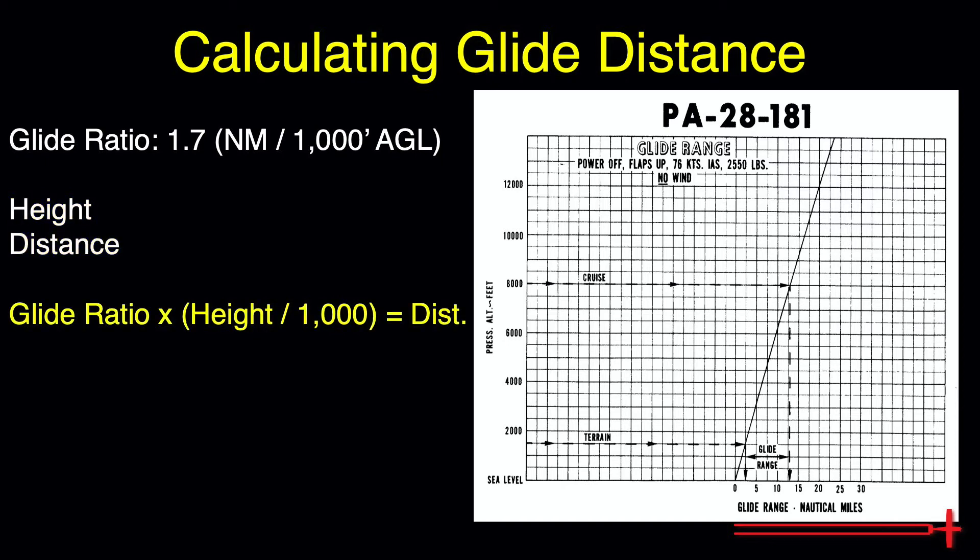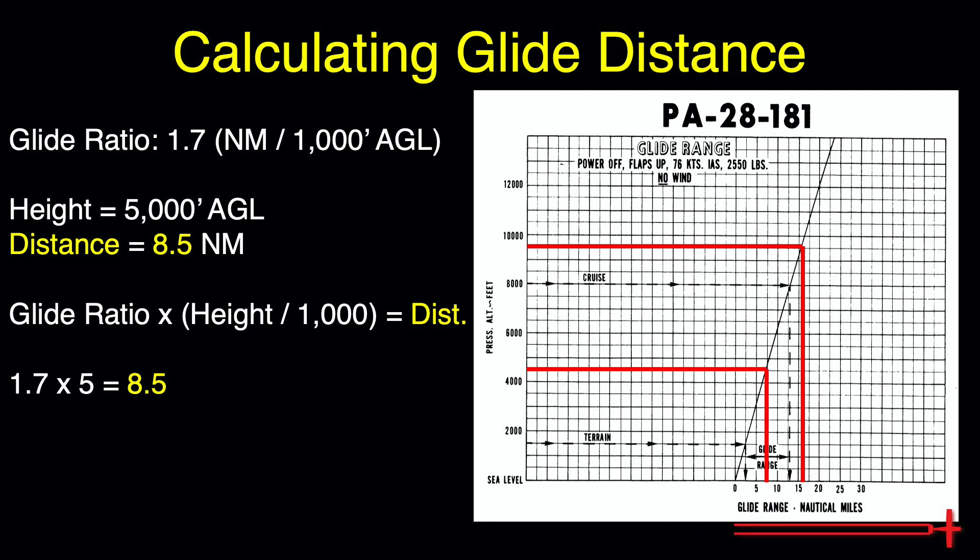As long as we have this equation and our aircraft's glide ratio memorized, we can calculate glide distance at any altitude. Based on our expected glide ratio of 1.7 with a height of 5,000 feet AGL, we should expect a glide distance of roughly 8.5 nautical miles.